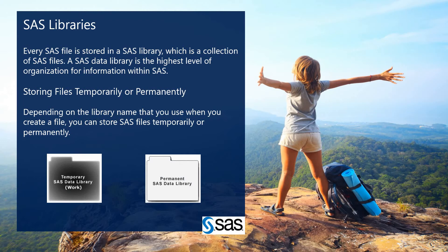So what are SAS libraries and how do they work? Every SAS file is stored in a SAS library, which is a collection of SAS files. Our SAS data library is the highest level of organization for information within SAS. There are two types: the permanent library and the temporary library. Depending on the library name you use when you create a file, you can store SAS files temporarily or permanently.